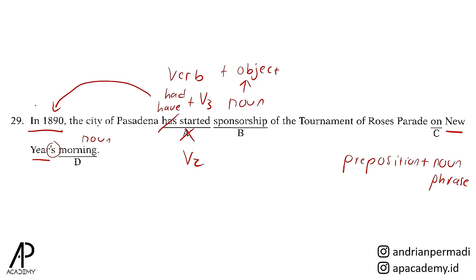Has started bisa benar apabila keterangan waktu memakai by, lalu setelahnya muncul tahun atau keterangan waktu lainnya. Apabila keterangan waktunya memakai by, maka verb yang dipakai adalah present perfect tense atau penggunaan have, has, lalu verb 3.